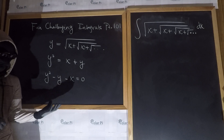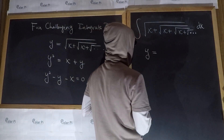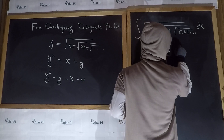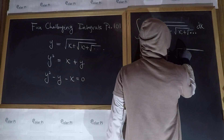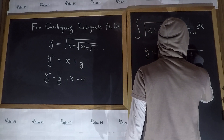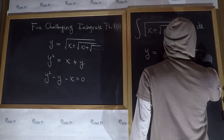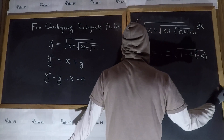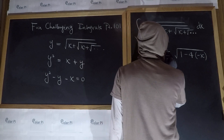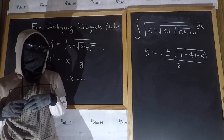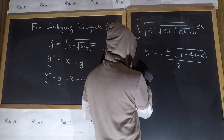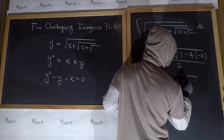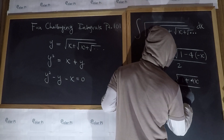So if we solve this quadratic in y using the quadratic formula, we get y equals: minus b — that's minus negative one, so that's one — plus or minus the square root of b squared minus 4ac, where a is one and c is negative x. So minus 4ac gives us plus 4x. All of this is divided by 2a, which is just 2. Cleaning up, we get y equals one plus or minus the square root of 1 plus 4x, all over 2.